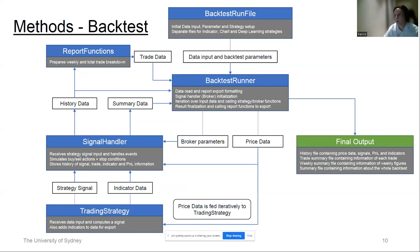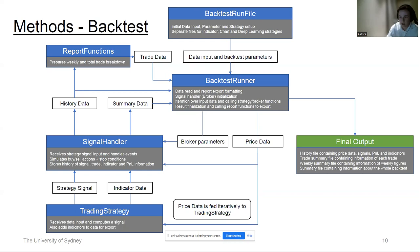Here's a brief outline of the backtest flowchart. Initial parameters are set up and initialised. Price data is fed iteratively to a trading strategy, which exports indicator data useful for mapping as well as a signal. A signal handler or broker object manages this by setting the environment to a trade condition and checking limit conditions. The signal handler concatenates and finalises history data into report functions, all fed back through to the main environment, giving a full history, weekly summaries, and a final summary of backtest performance.